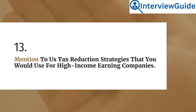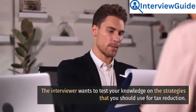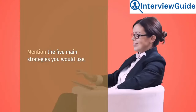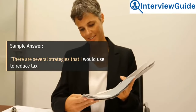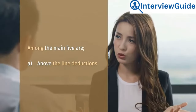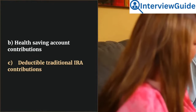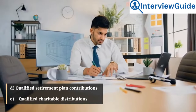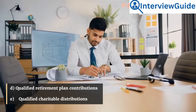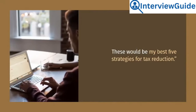Question 13: Mention tax reduction strategies that you would use for high-income earning companies. The interviewer wants to test your knowledge on strategies for tax reduction. Mention the five main strategies you would use. Sample Answer: There are several strategies that I would use to reduce tax. Among the main five are: A. Above-the-line deductions. B. Health-saving account contributions. C. Deductible traditional IRA contributions. D. Qualified retirement plan contributions. E. Qualified charitable distributions. Those would be my best five strategies for tax reduction.